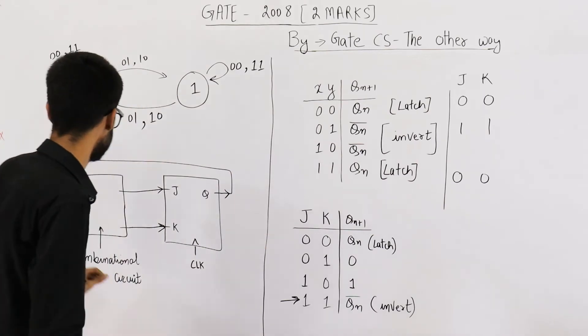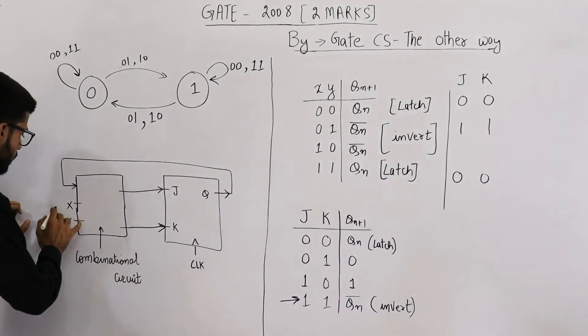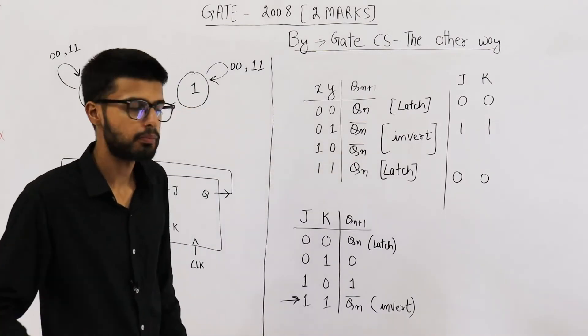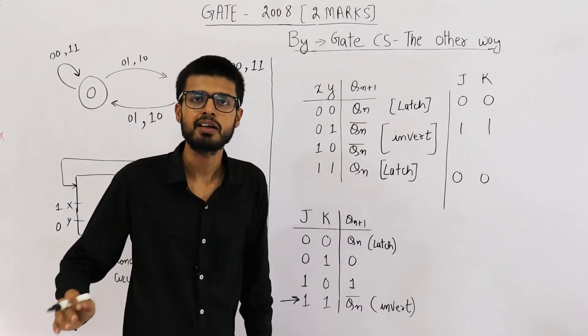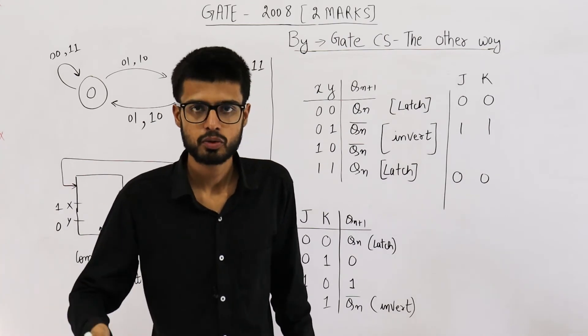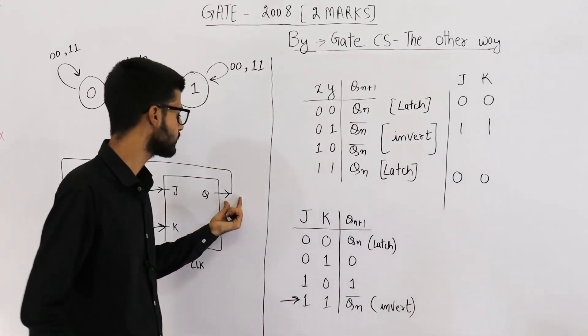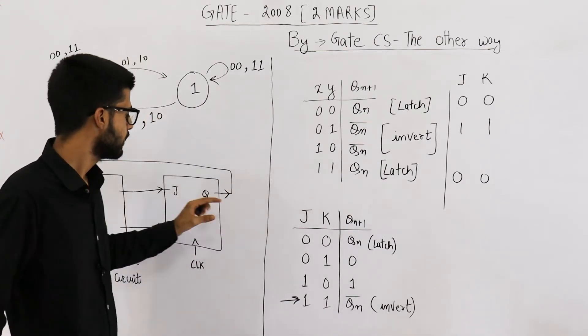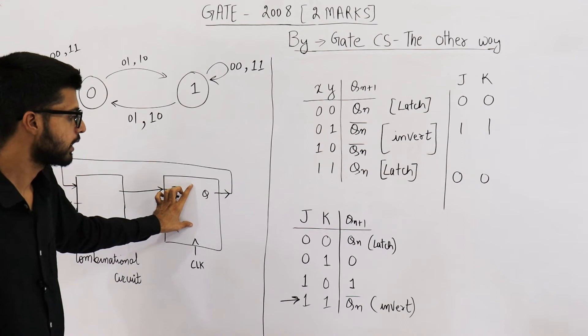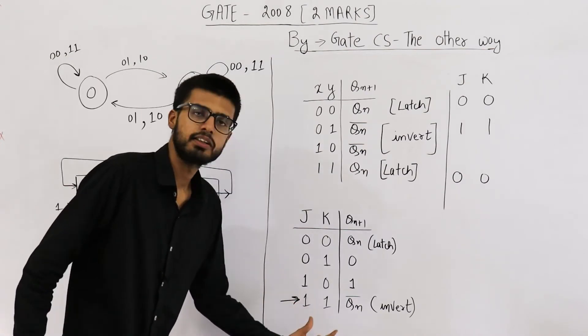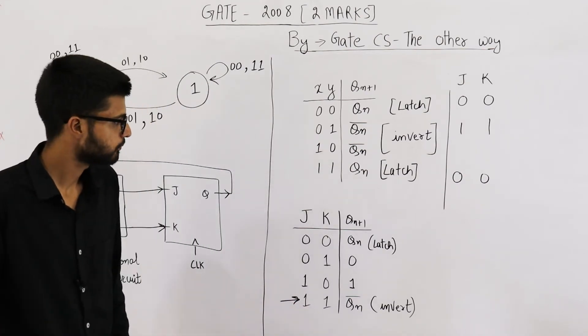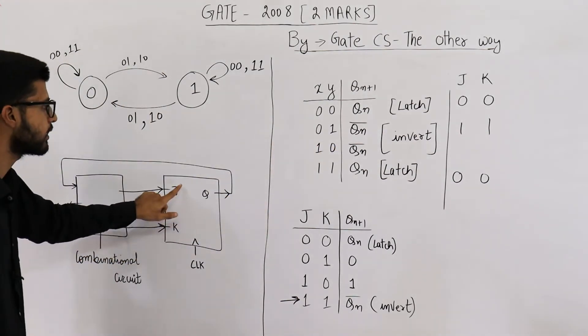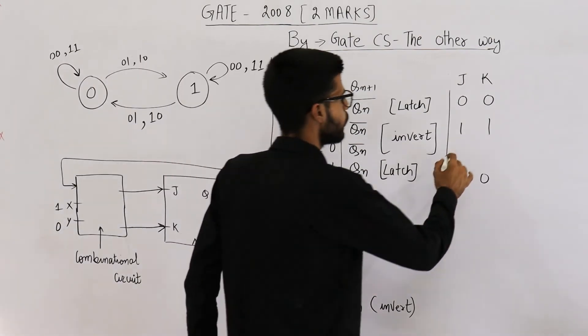Similarly, when I apply 1,0, I want the output must be complemented. That means whatever is the current value of Q, next value must be its complement. If currently Q is 0, next value must be 1. If currently it's 1, next value must be 0. JK can show such a behavior only when the inputs J and K are 1,1. That means if I apply 1,0 on X,Y, this must get 1,1. So I am writing 1,1 here.